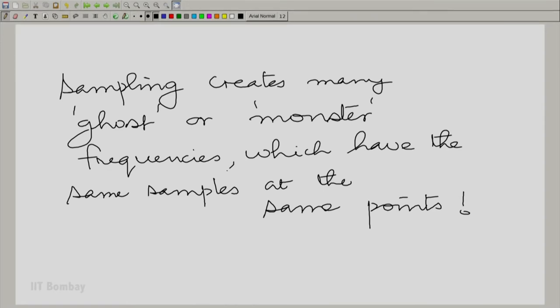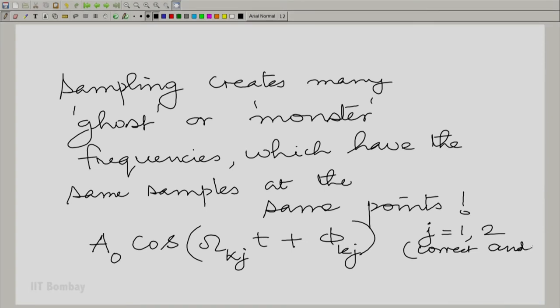In other words, what we are saying is that you have many other frequencies. Let us call them omega_k, essentially, A_0 cos(omega_kj t + phi_kj) such that, of course, you remember, we had said that j corresponds to the two possibilities of correct and wrong edge.